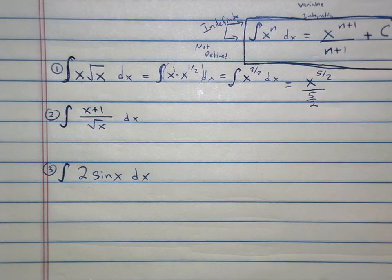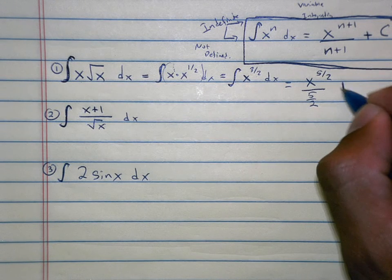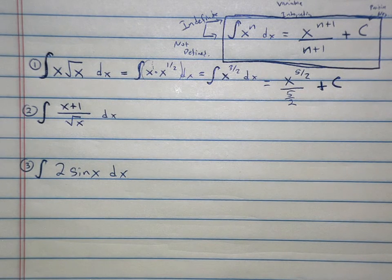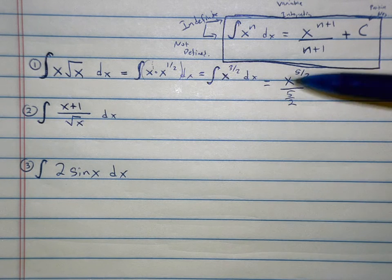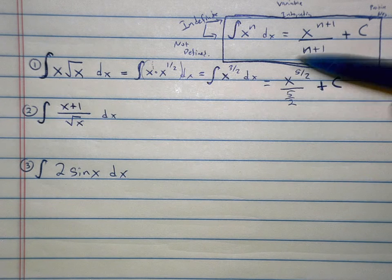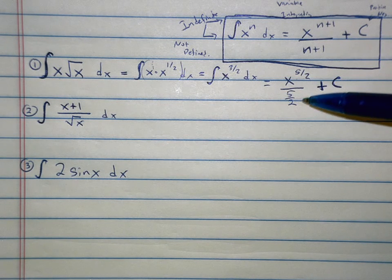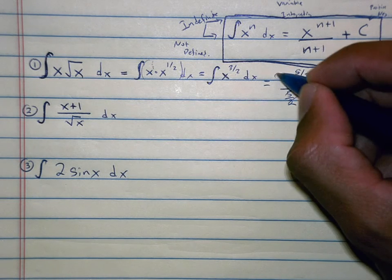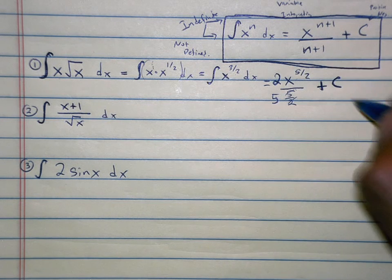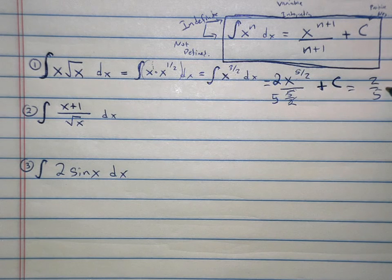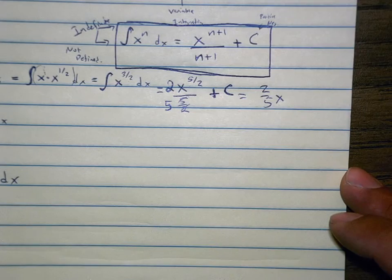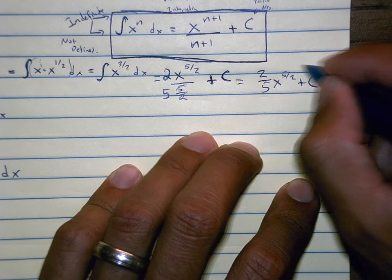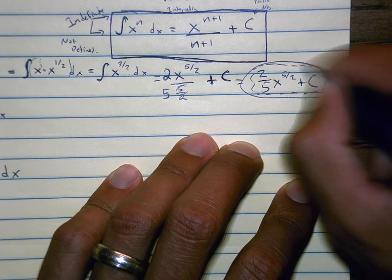And I divide by the same number — 5 halves. Am I forgetting something? The integral of dx? Plus c. Dividing by 5 over 2 is the same as multiplying by 2 over 5, so this integral is 2 fifths x to the 5 halves power plus c. That is the answer to number 1.